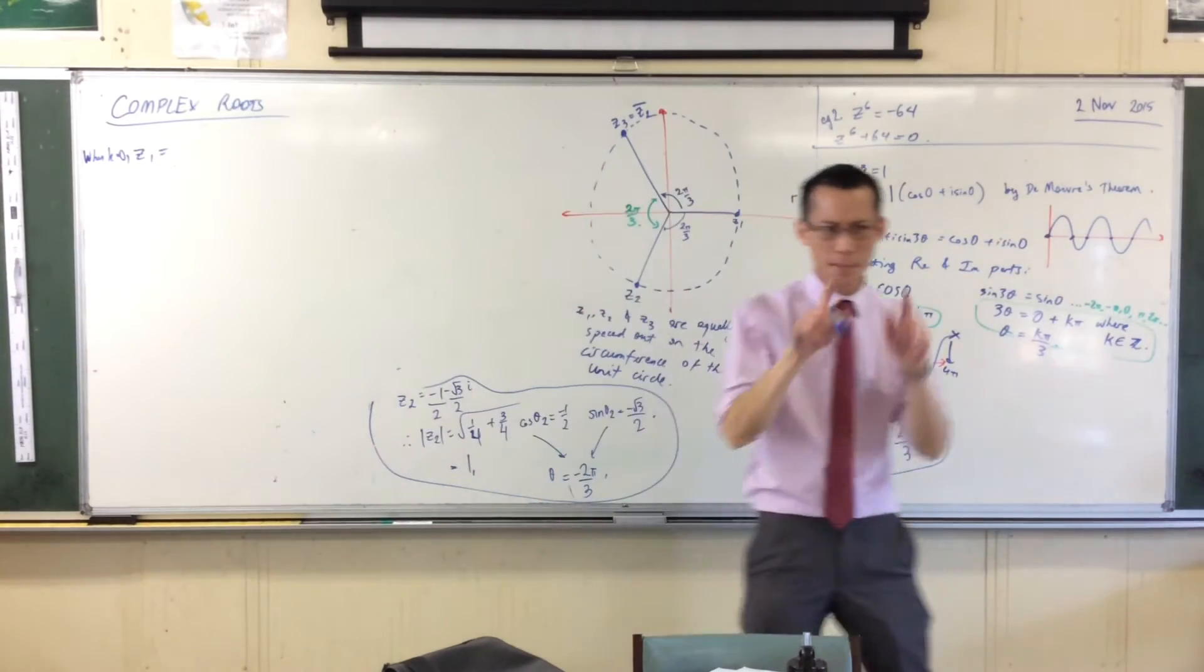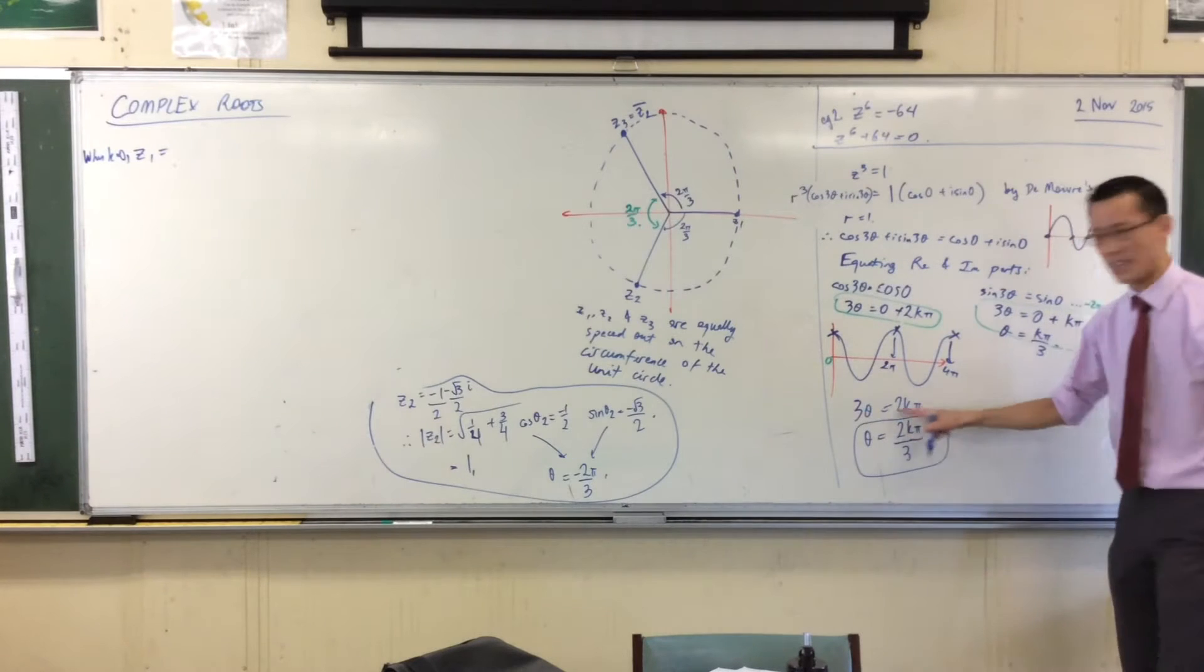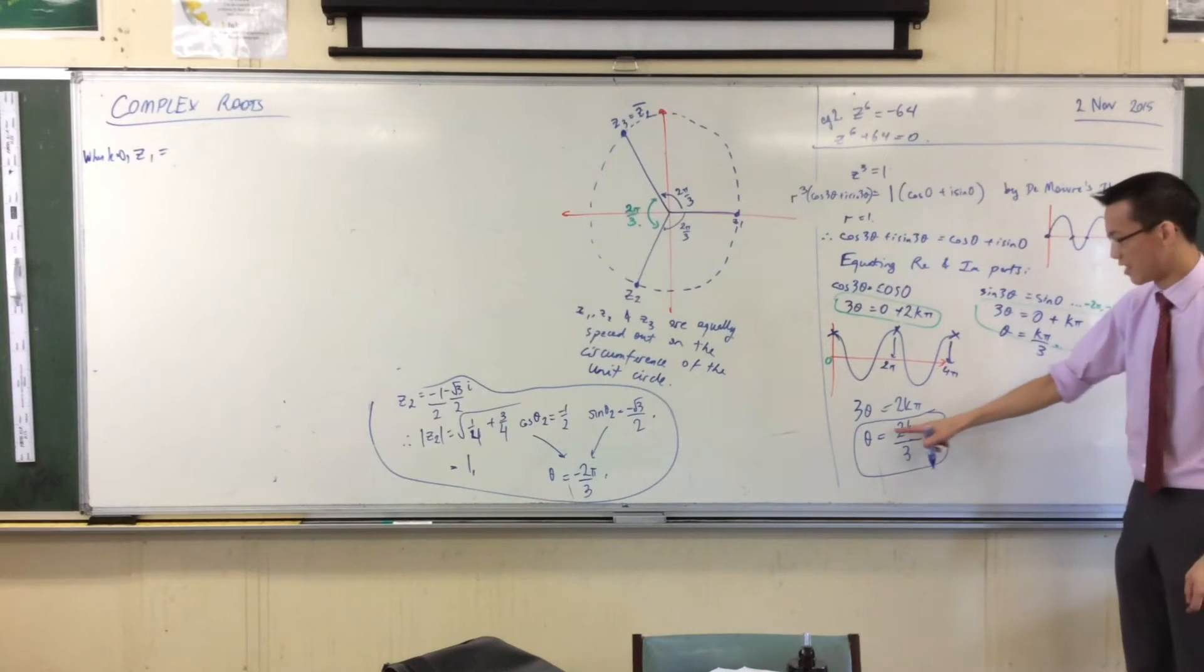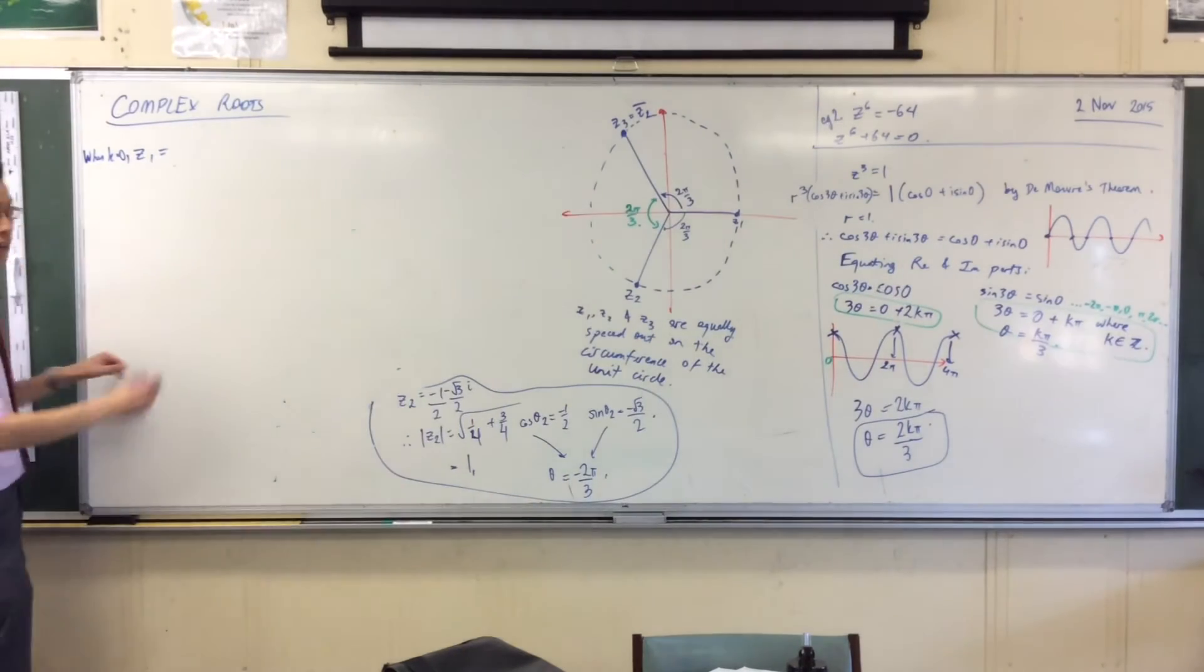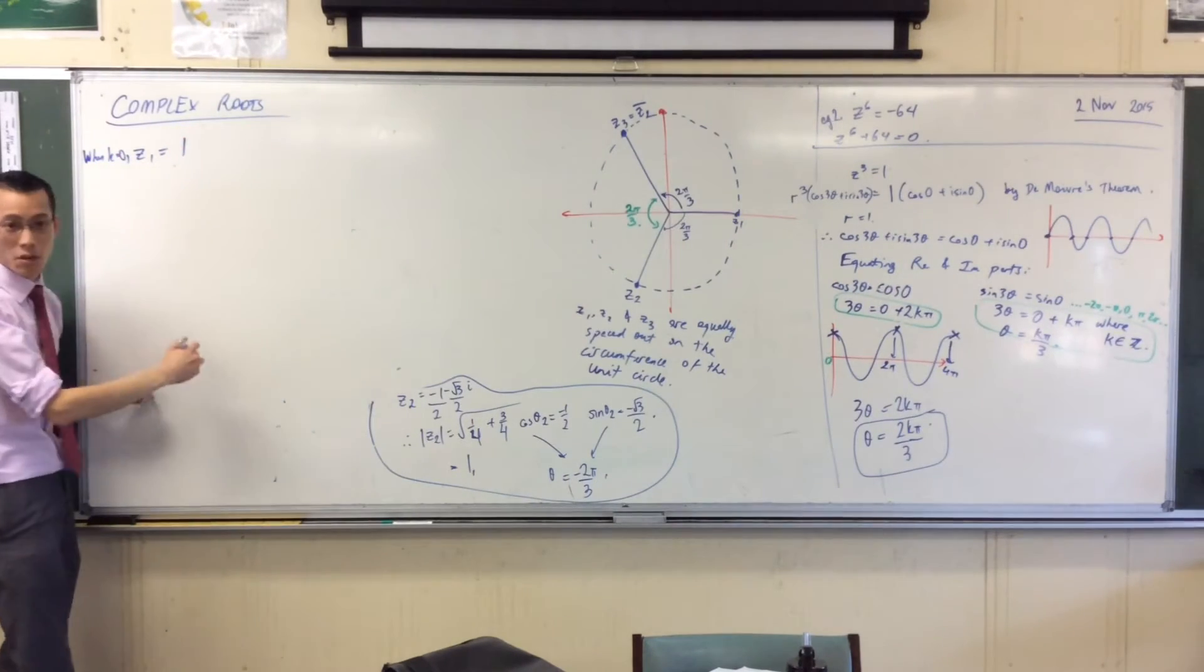and partly because I know, think about this. What argument am I going to expect? 2 times 0 times pi on 3. So when I pop this into Monarch form, I've got 1, there's the modulus.